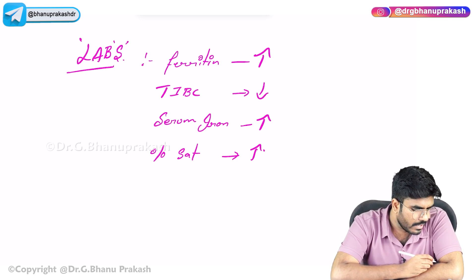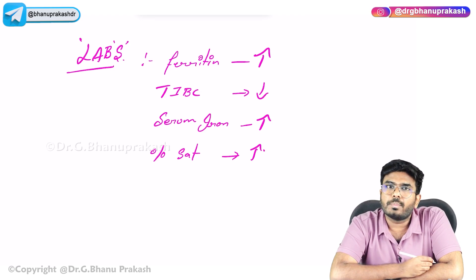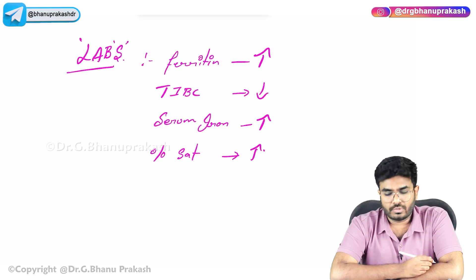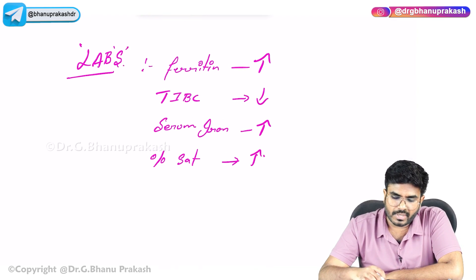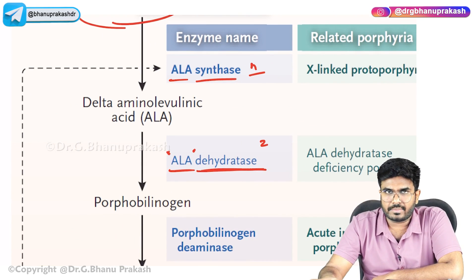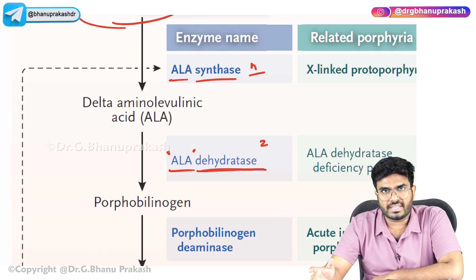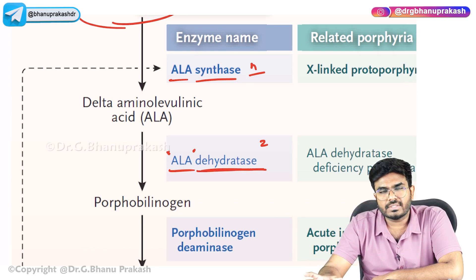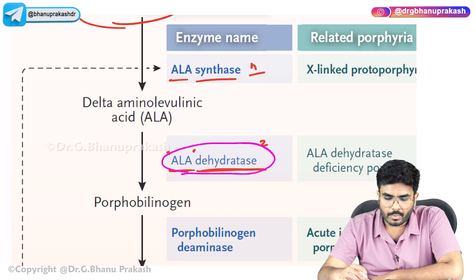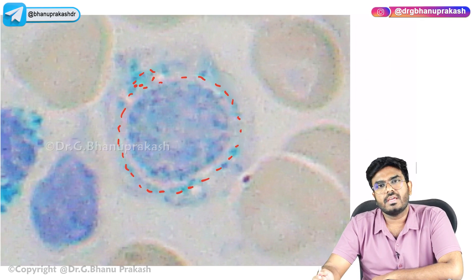To summarize sideroblastic anemia: causes include B6 deficiency, alcoholism, and lead poisoning. Key findings include ringed sideroblasts on bone marrow examination. Lead poisoning specifically inhibits both ALAD and ferrochelatase. The key enzymes are ALA synthase and ALA dehydratase (with B6 as cofactor for ALA synthase), and ferrochelatase catalyzes the final fusion of iron with protoporphyrin.